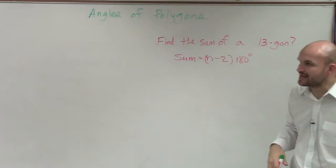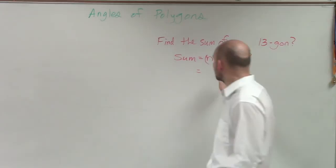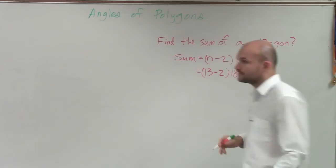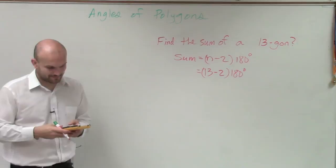So when looking at this, a 13-gon tells us it's going to have 13 sides. So I do 13 minus 2 times 180 degrees. So 13 minus 2, that's going to be 11 times 180. 1,980.